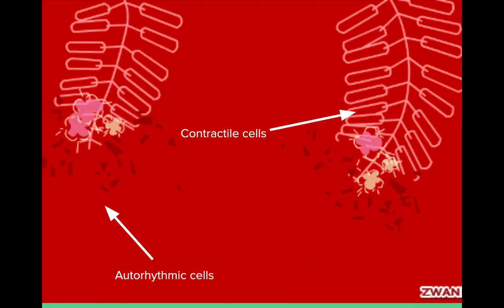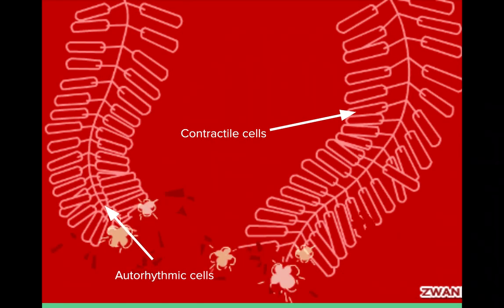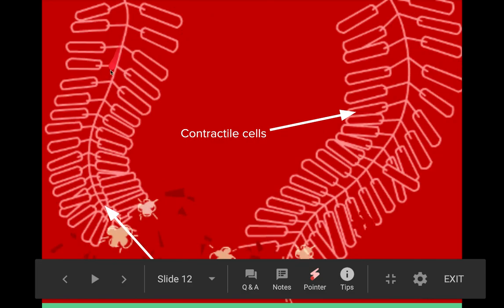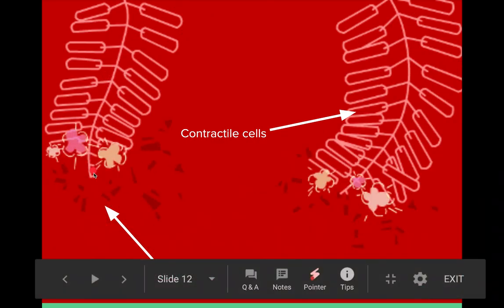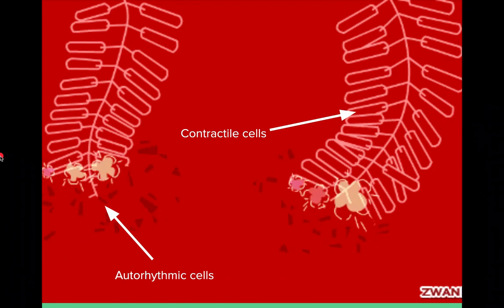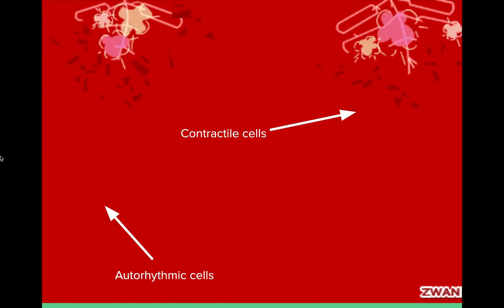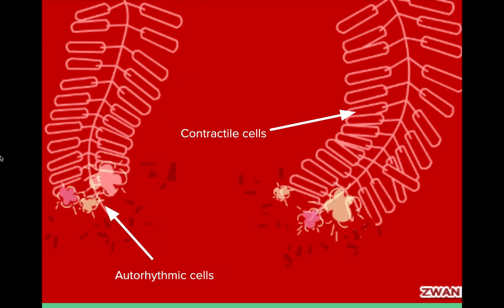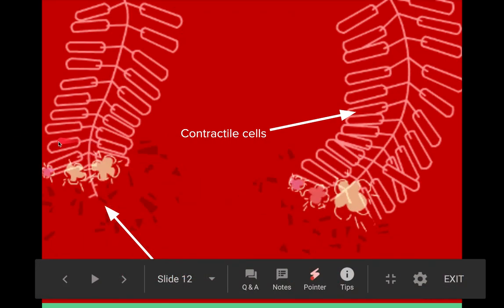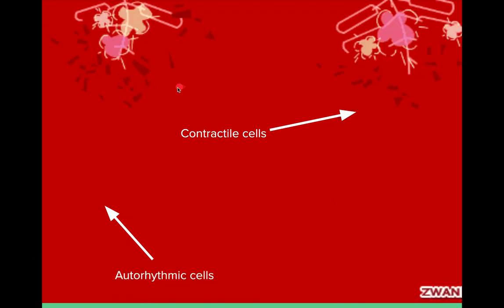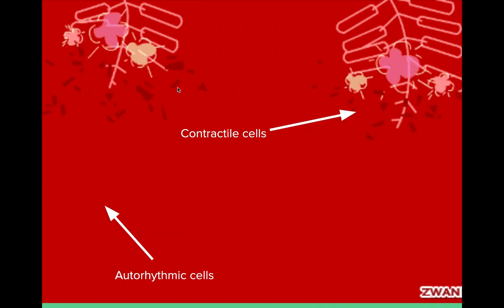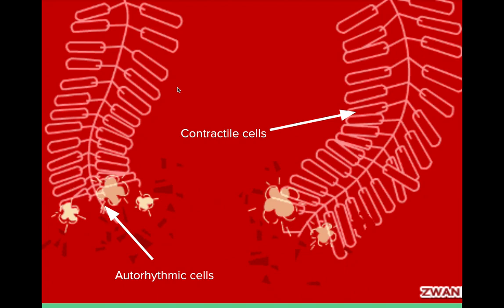Here's what I mean by a firecracker — this analogy really helps me think about how the heart contracts. The fuse's job is not to explode; it doesn't actually cause the bang. That's why I think it's like the autorhythmic cells — their job is just to light the fuse and start the process, generating the action potential even though they're not trying to contract. But as that fuse travels down, it spreads to the firecrackers on either side. Those are like our contractile cells — the ones that actually cause the explosion.